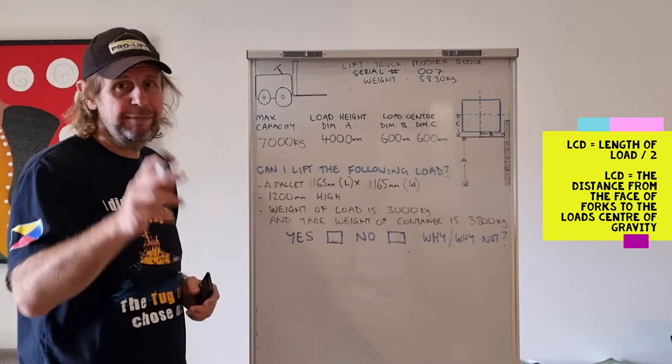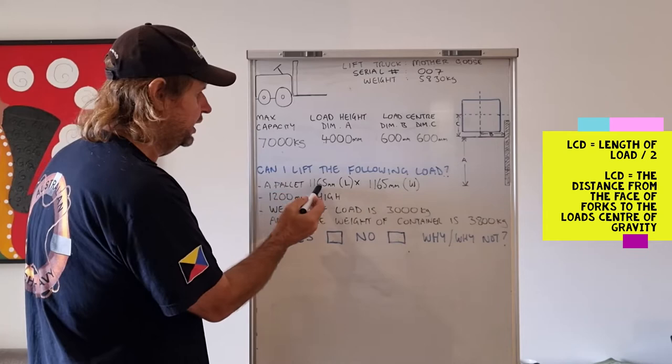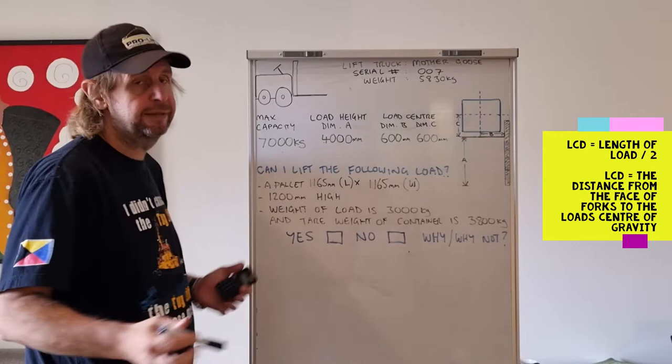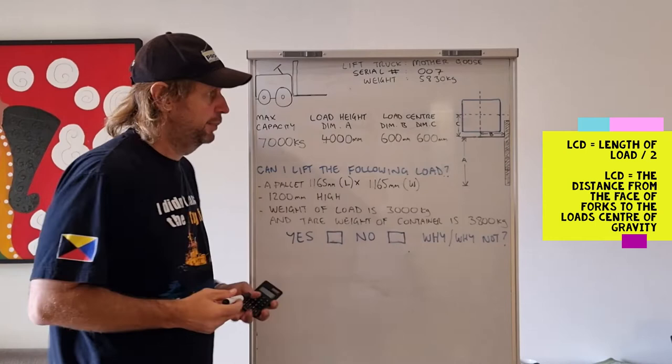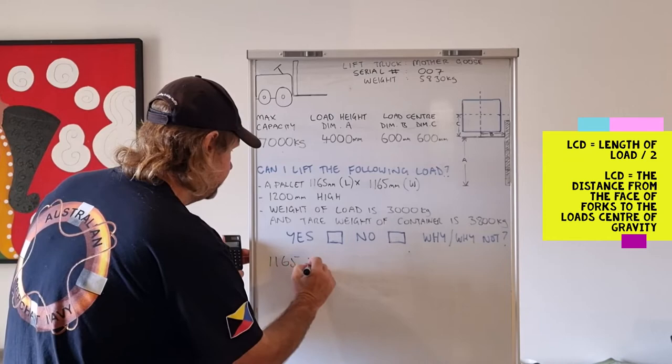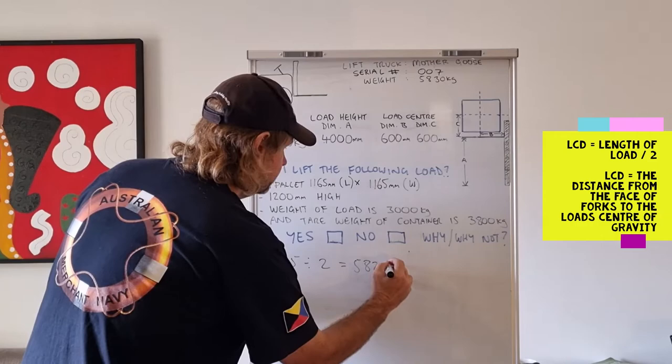All right, so let's get down to our problem. Can I lift the following loads? The pallet is 1165 millimeters long and 1165 millimeters wide. So that's a standard pallet. Okay. Let's work out the load center distance. The distance from the face of the forks to the load center of gravity. So if we put it on there, what's it going to be? So how do we do that? 1165 divided by 2 equals 582.50. That falls within that 600 millimeters.